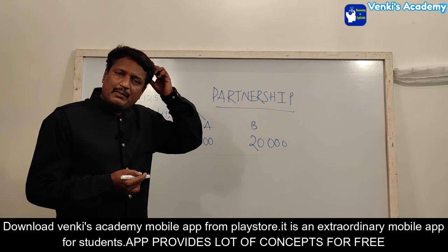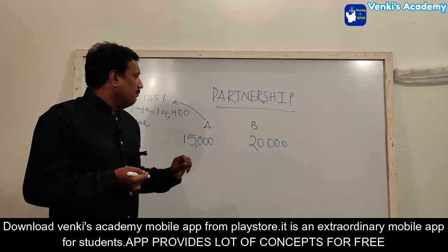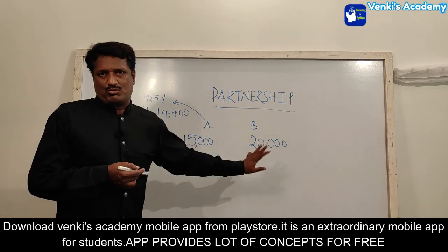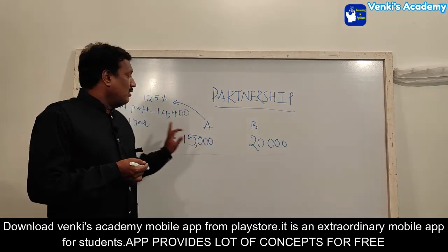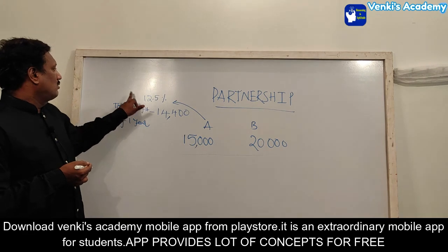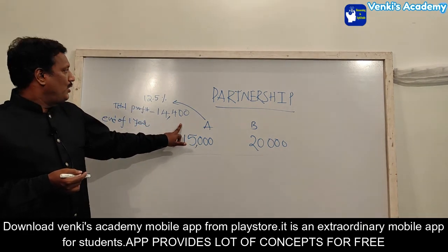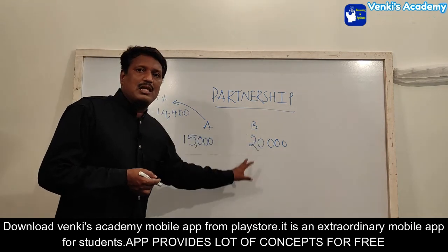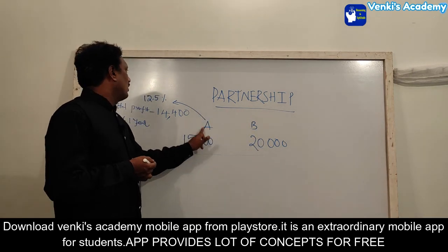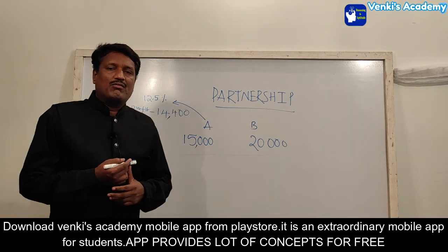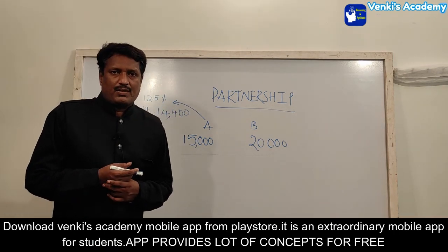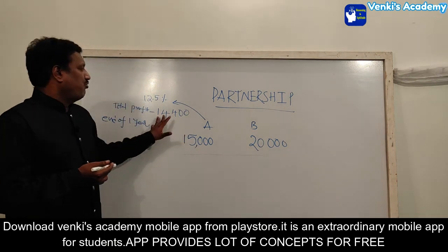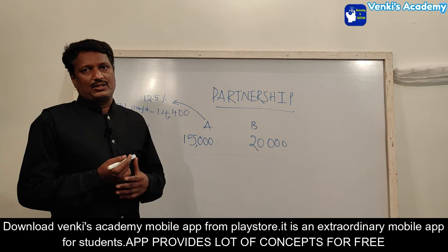Problem: C and B together started a business with investments of fifteen thousand and twenty thousand. At the end of one year, they got a total profit of fourteen thousand four hundred. A is the active partner and B is the sleeping partner. A gets four point five percent of the total profit for managing the business. Find the final share of A and B.